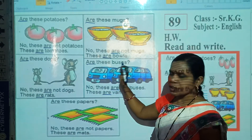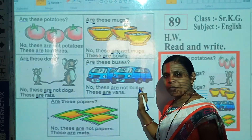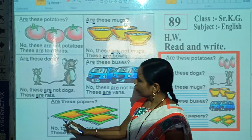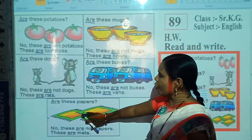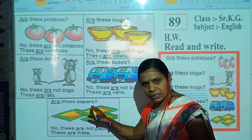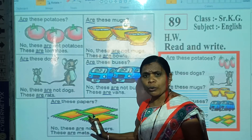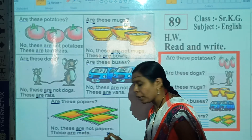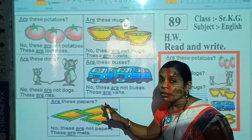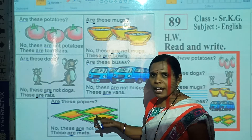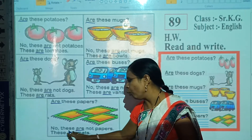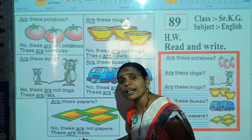Now look here. Which picture is this? Correct, this is the picture of masks. Now read this question: Are these papers? No, these are not papers. These are masks. If here are papers, then we will say: yes, these are papers. But here are masks, and the question is different: Are these papers? So we reply: no, these are not papers. These are masks.